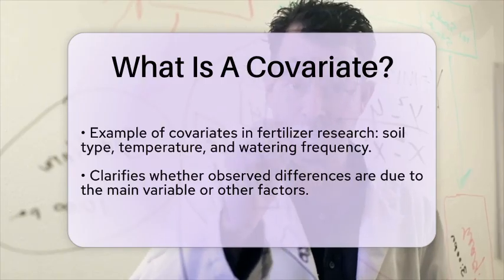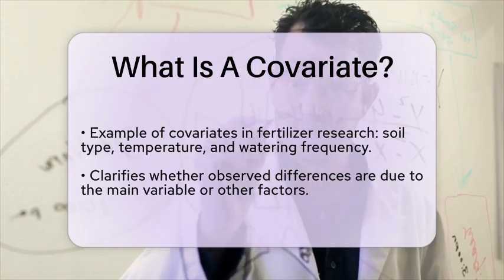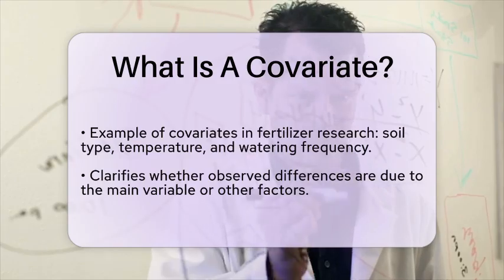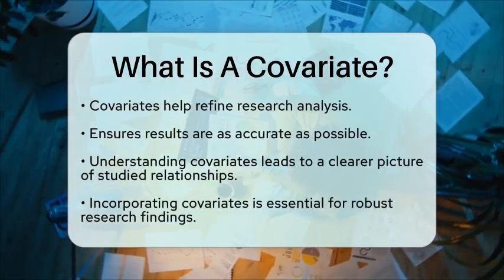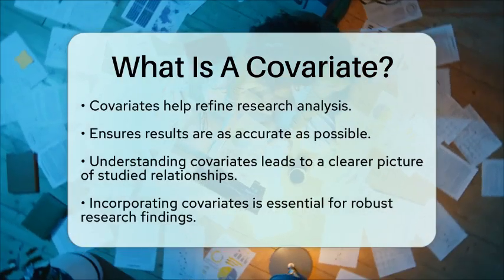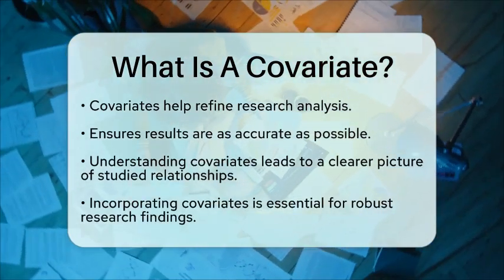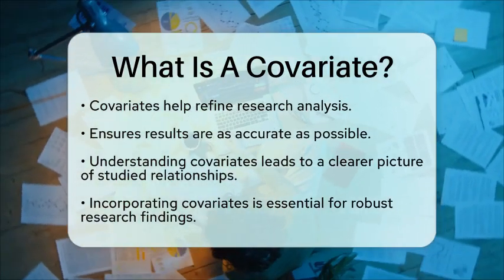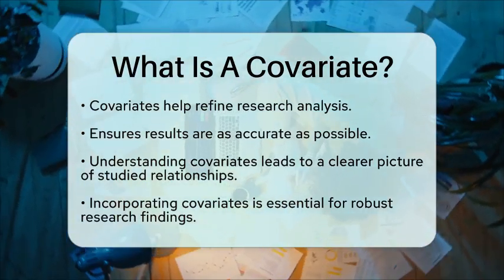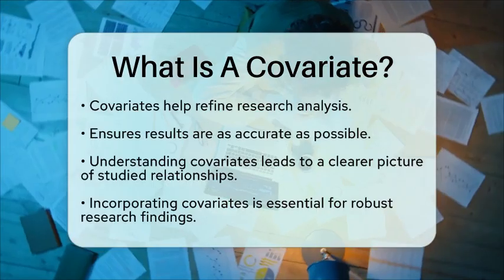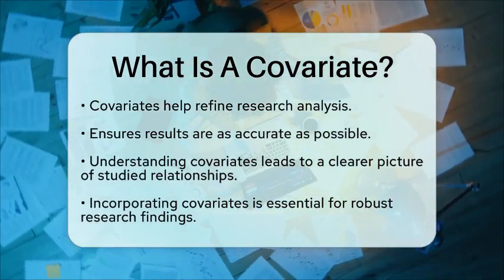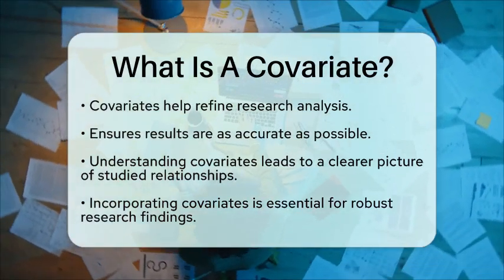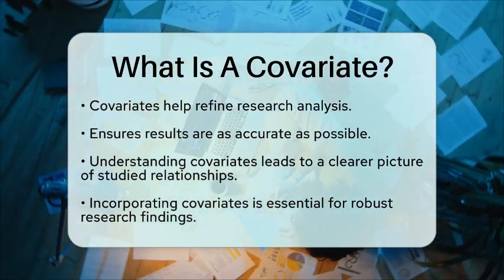These additional variables can help clarify whether the differences in plant height are truly due to the fertilizers or if they are influenced by other factors. In summary, covariates play a significant role in research by helping to refine the analysis and ensure that the results are as accurate as possible. By understanding and incorporating covariates, researchers can gain a clearer picture of the relationships they are studying.